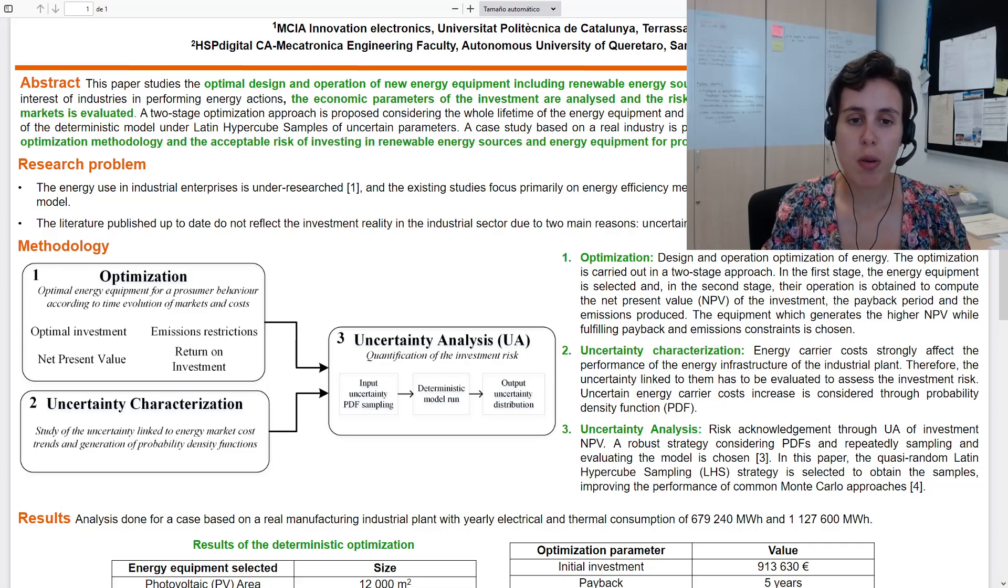In this way, it is possible to compute the net present value of the investment and select the one with better economic perspectives. Once the equipment is obtained to evaluate the risk related to it, the uncertainty in the cost of energy carriers, which are electricity and gas, is characterized and expressed as probability density functions.